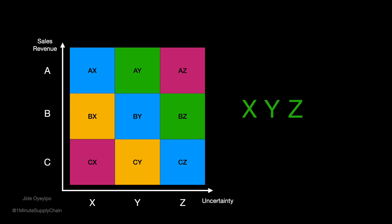XYZ categories represent the level of uncertainty of demand for a product, with X the least uncertain and Z the most uncertain. The level of uncertainty can be quantified using the coefficient of variation, which is the standard deviation divided by the average demand.